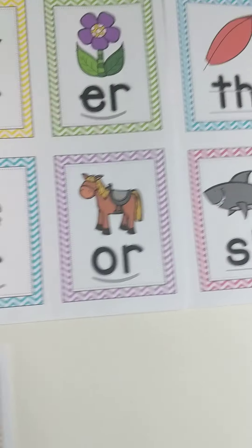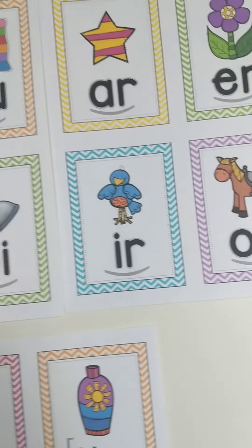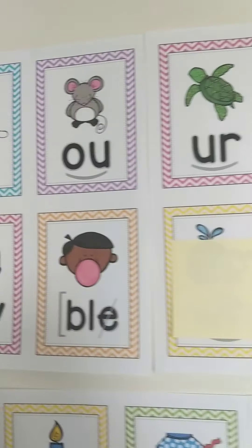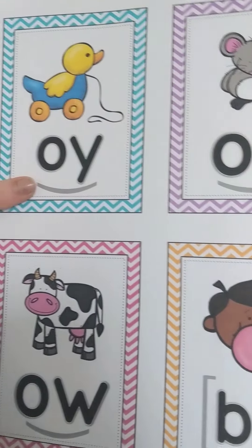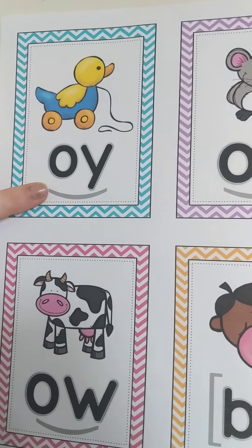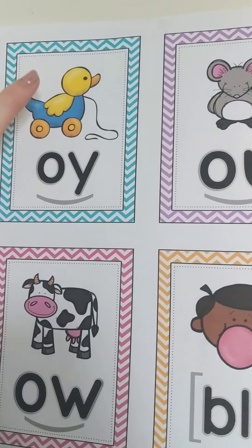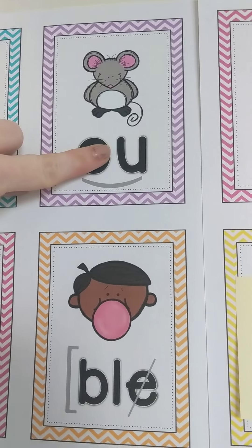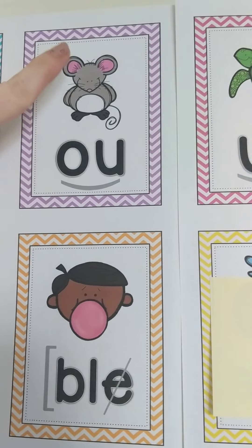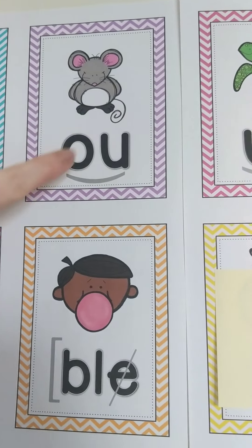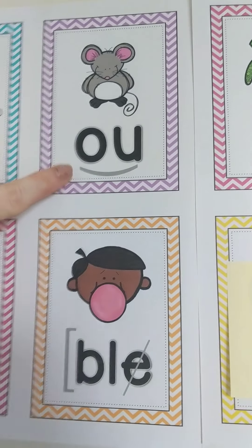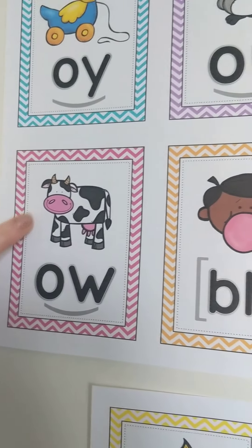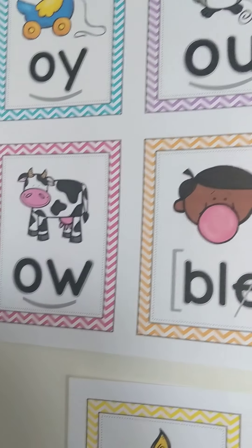So let's go ahead and start with OY. We have O-Y, toy, oy. O-U, mouse, ow. O-W, cow, owl.